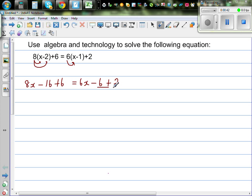First let us simplify the left hand side. So this is 8x. Negative 16 plus 6 is negative 10, which is equal to 6x minus 4.